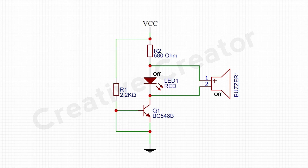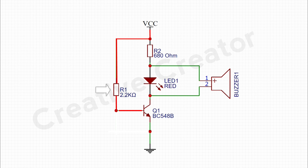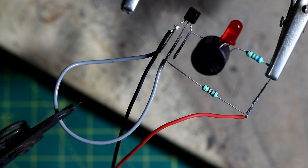For the other case, when the base and the emitter is open circuited — meaning the wire does not connect to the base and the emitter — the current flows from VCC to the transistor's base through the 2.2K resistor. For this reason, the transistor will turn on, and the current flows from the transistor's collector pin to emitter pin, and the LED and the buzzer will turn on.